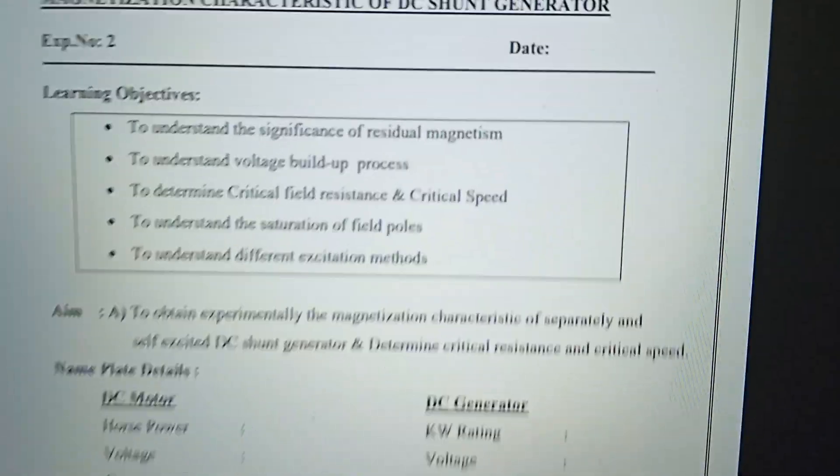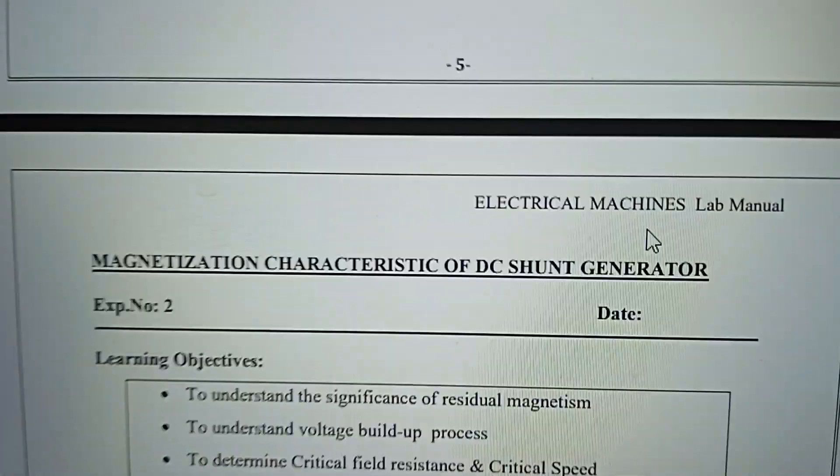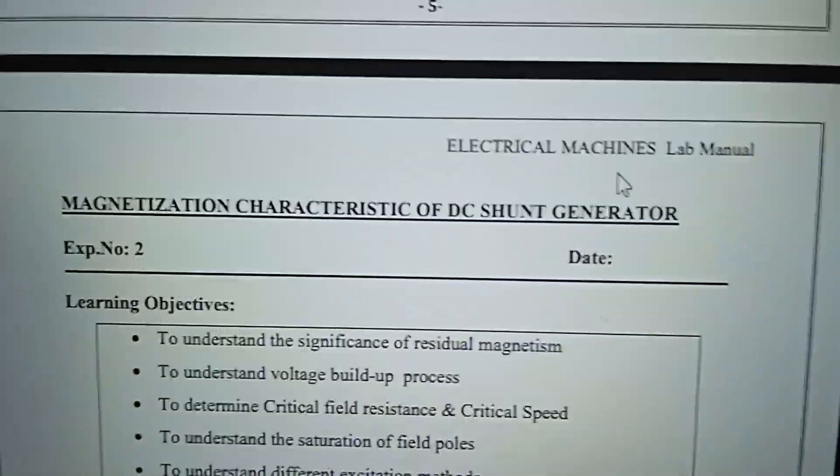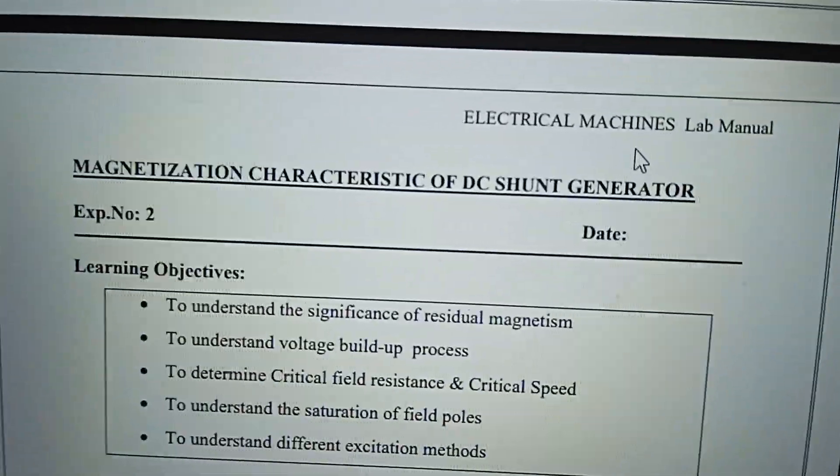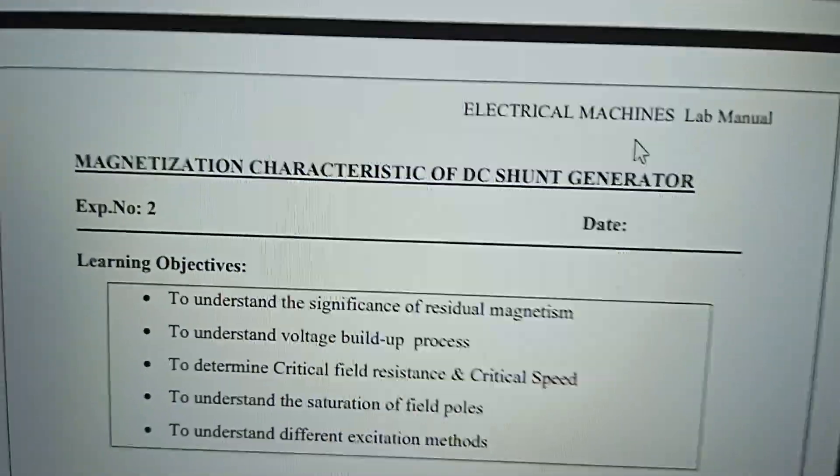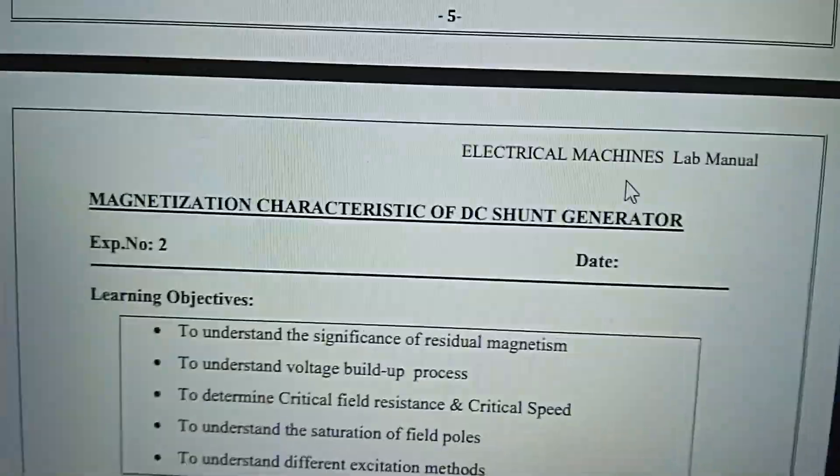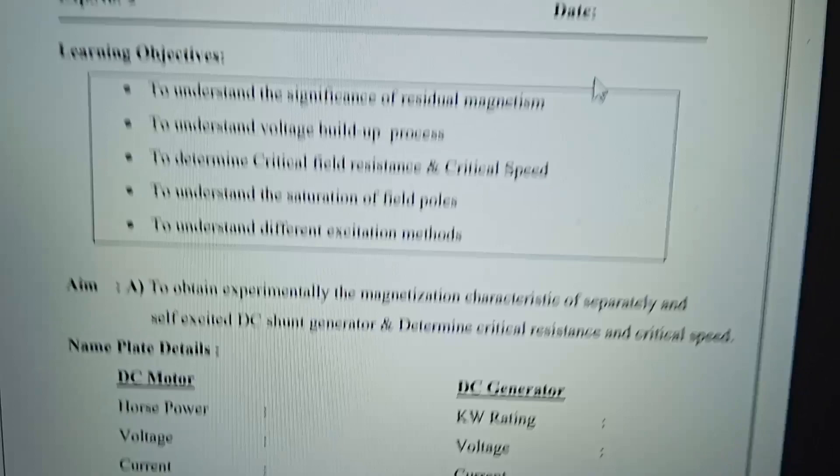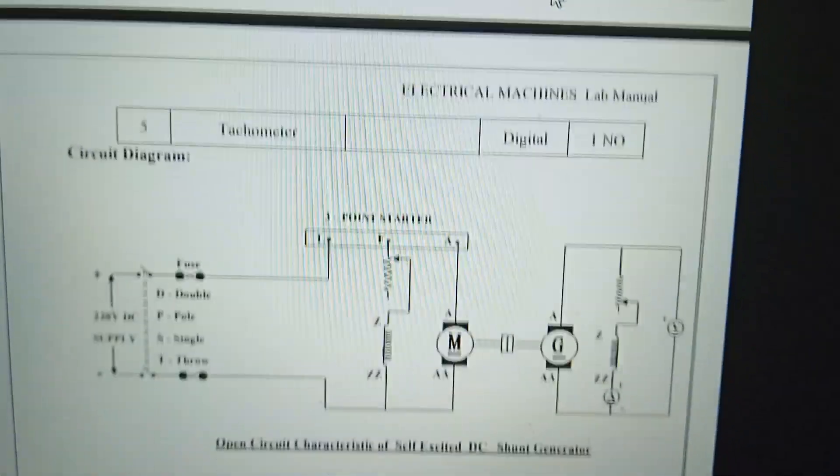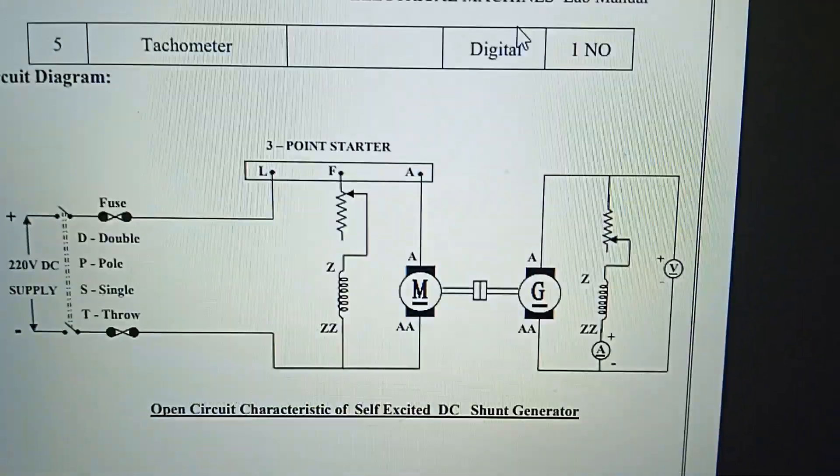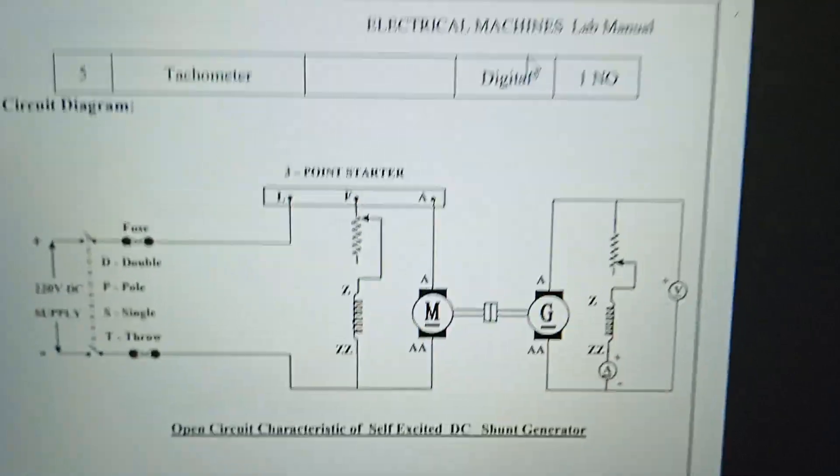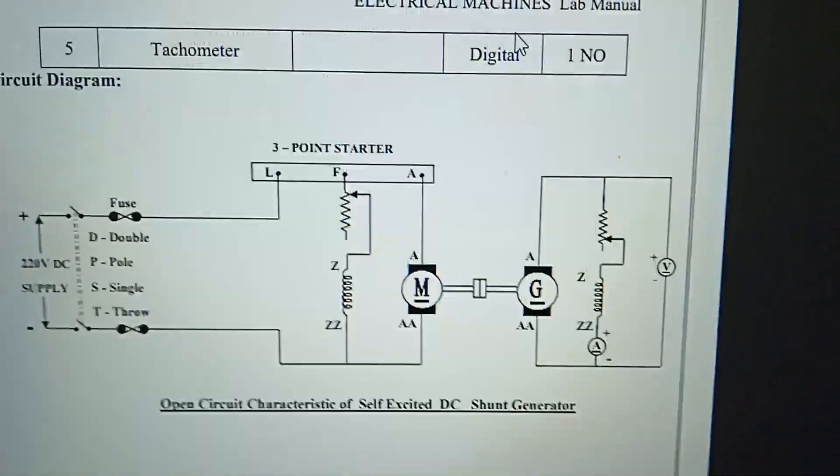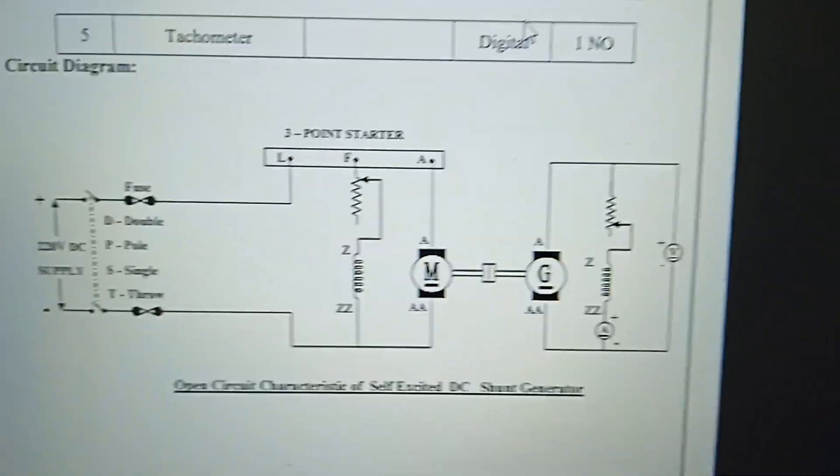Magnetization characteristic of DC shunt generator to understand the significance of residual magnetism, voltage build, critical field resistors, critical speed, saturation of field force, and different excitation. This is the circuitry - this is self-excited. A self-excited generator where the field supply and power supply come from the generator itself.